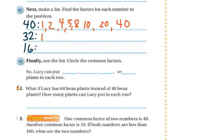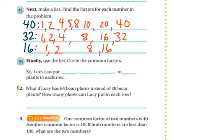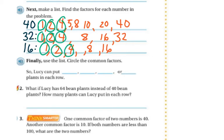Factors of 32: 1 times 32, 2 times 16, and 4 times 8. If you need to use your multiplication chart, you can. Factors of 16: 1 times 16, 2 times 8, and 4 times 4. Now I'll figure out which ones they have in common. They all have 1, they all have 2, they all have 4, and they all have 8. Two of them have 16, but not all three. So Lucy can put them in rows of 1, rows of 2, rows of 4, or rows of 8.